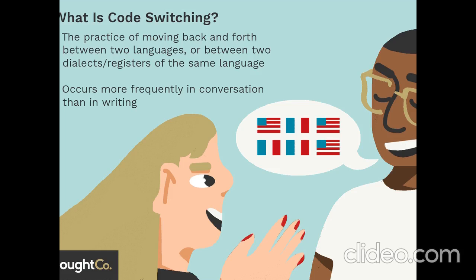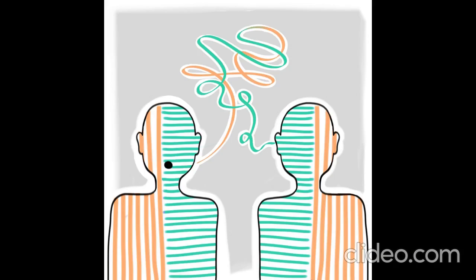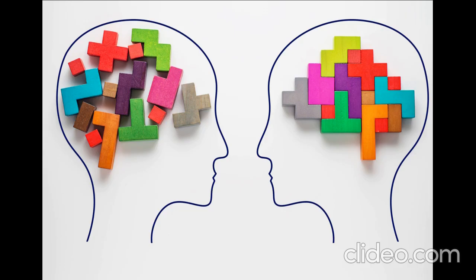Consequently, code-switching is a language-oriented theory, while translanguaging is a user-oriented theory. Code-switching refers to a very broad sociolinguistic perspective, as it favours the use of different dialects, accents, language combinations and mannerisms within social groups to project a particular identity.